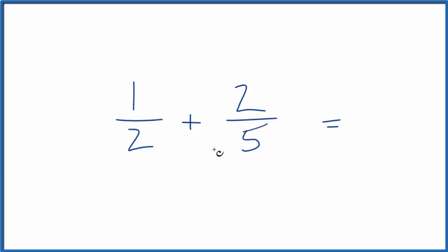When we're adding fractions we want to get the denominator, the number on the bottom, to be the same. Then we just add the numerators and we'll have our fraction. To do that we need to find a common denominator, a number that both 2 and 5 go into.